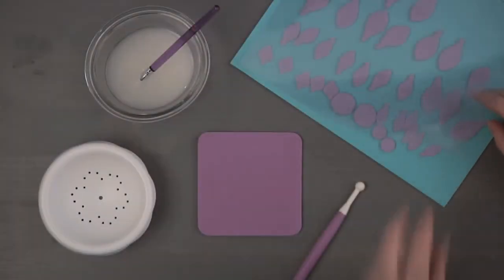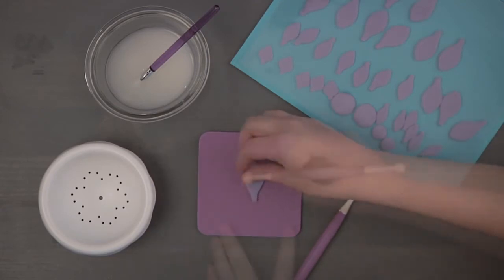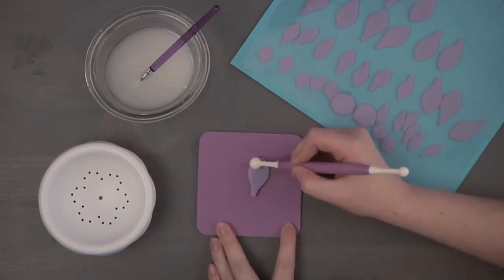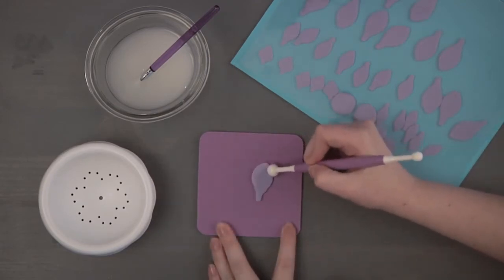Place one of the largest leaves on a cornstarch dusted piece of thin or medium foam. Using the small ball tool, soften the outer edge of the leaf, pinching the end with fingers to form a point.